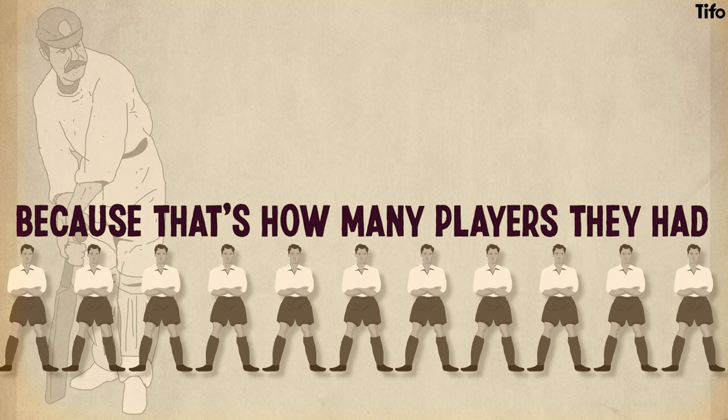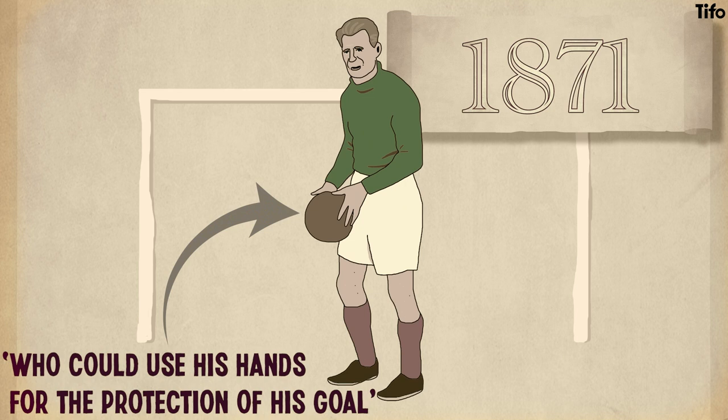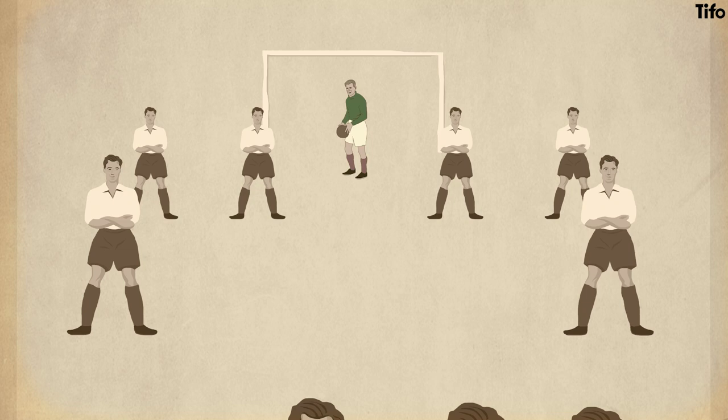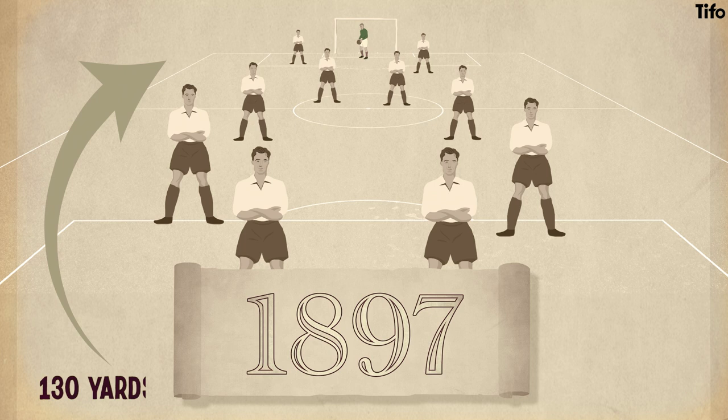Alternatively, it might have been a case of trial and error. Following the introduction of a goalkeeper who could use his hands for the protection of his goal in 1871, eleven players might have gradually become a conventional norm as an ideal amount for the various roles on the pitch, or the amount of space that needed filling. That predates another rule change which occurred in 1897, which reduced the maximum length of the pitch from 200 yards to 130. But the team size survived that reduction and has remained the same ever since.